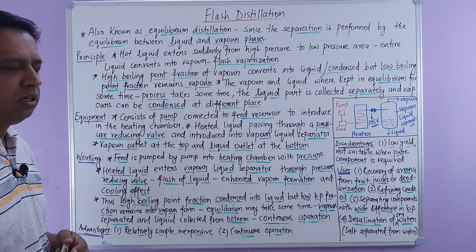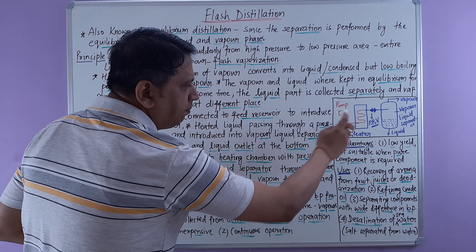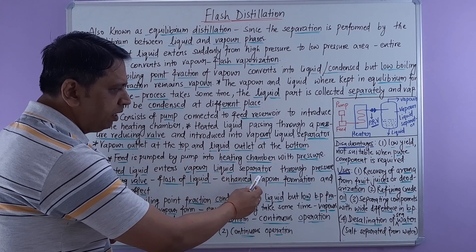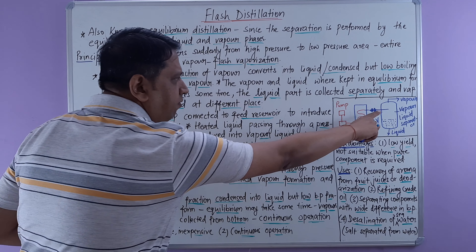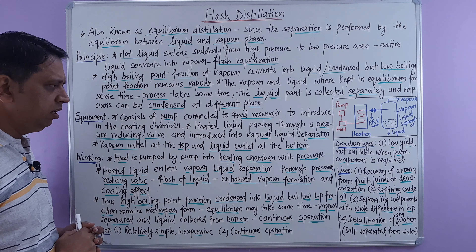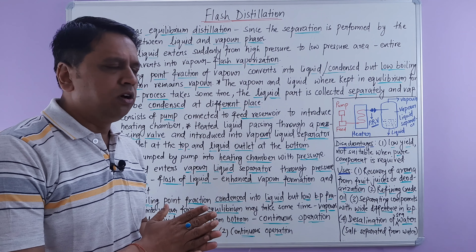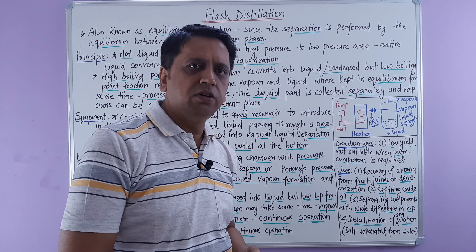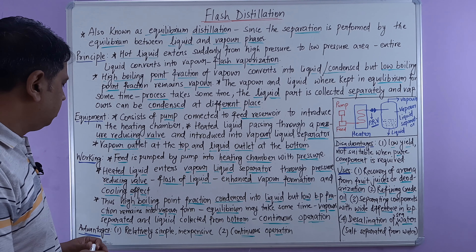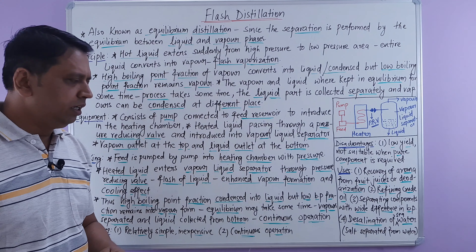Now let us come to the working part. The feed is pumped into the heating chamber with pressure. The heated liquid then enters the vapor-liquid separator through the pressure reducing valve, and there is a sudden flash of the liquid which enhances vapor formation. When the liquid vaporizes in such a manner, there will also be a sudden cooling effect due to the rapid vaporization.